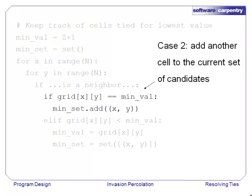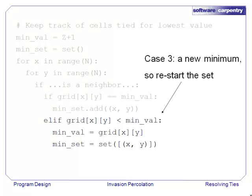In case two, the value of the cell we're looking at ties with the minimum value we've seen so far so we add the coordinates of this cell to the set. Finally, in case three, we've got a new minimum value so we record that minimum value and then put the coordinates of this cell into the set.